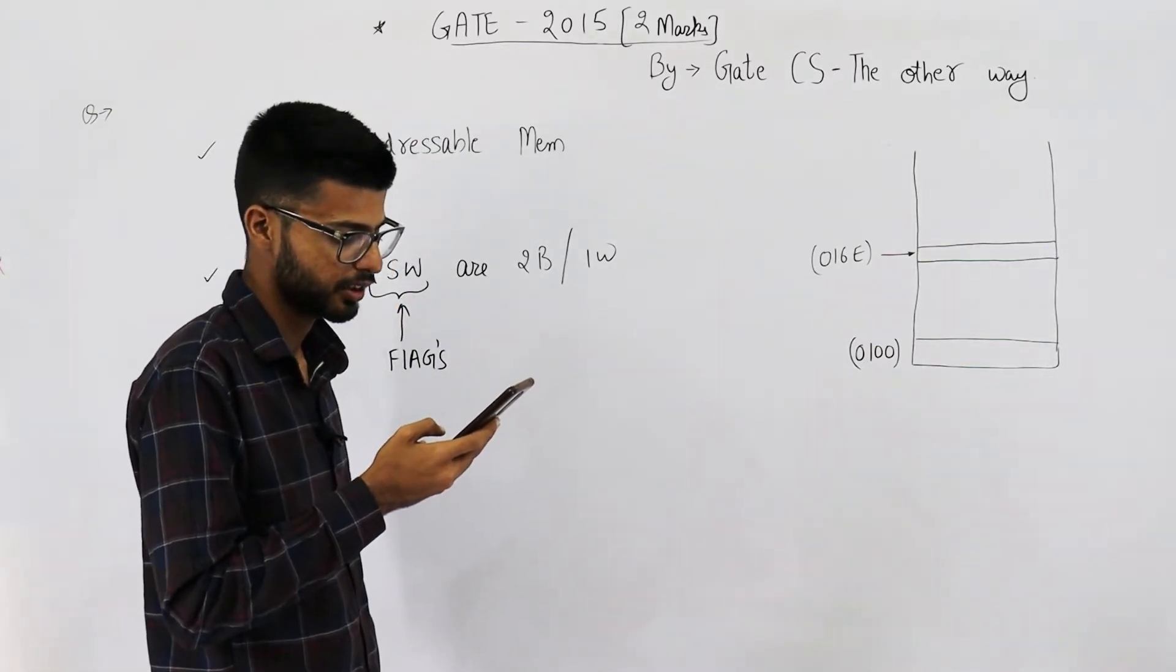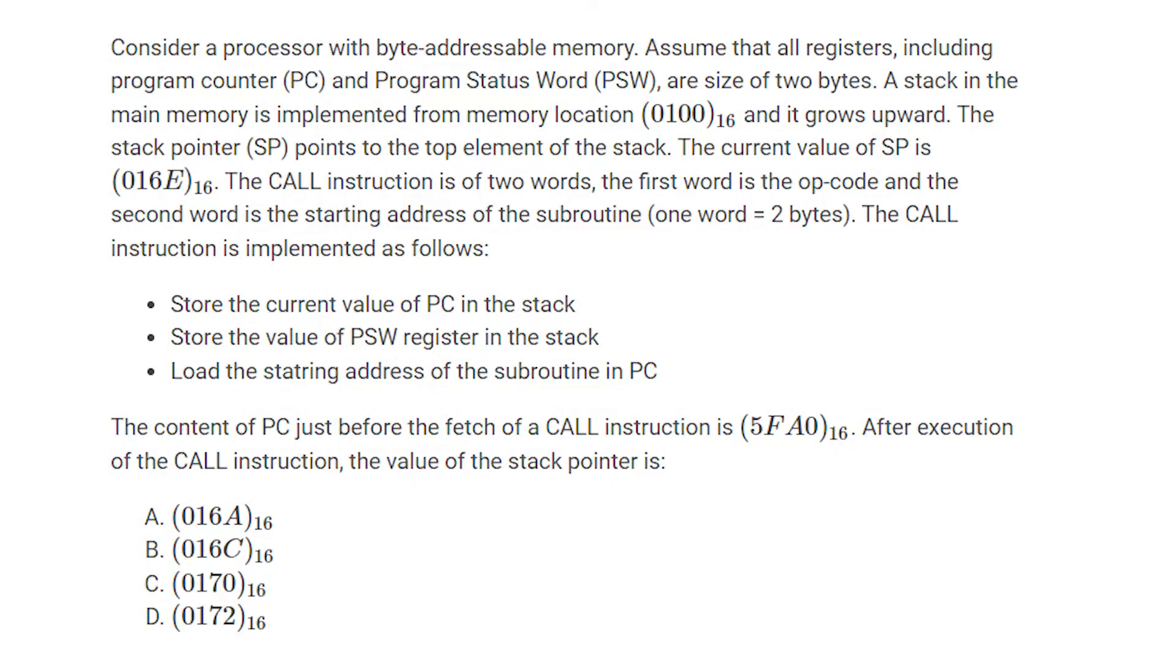The call instruction is of two words. The first word is opcode and second word is the starting address of subroutine. One word is equal to two bytes. The call instruction is implemented as follows. They've given three steps.